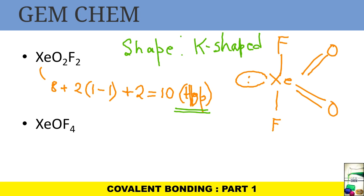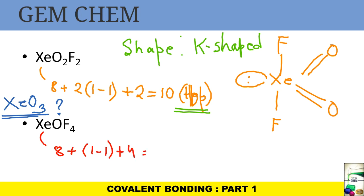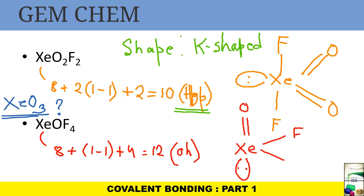Remember: double bonds and lone pairs occupy greater space and should always be placed at equatorial positions in TBP structures. For XeOF4: xenon has eight electrons, plus one oxygen (+1 sigma −1 pi), plus four fluorines (+4), giving twelve — octahedral. The lone pair and double-bonded oxygen are placed trans to each other to minimise repulsion. The four fluorines occupy the equatorial plane and the shape is distorted square pyramidal.